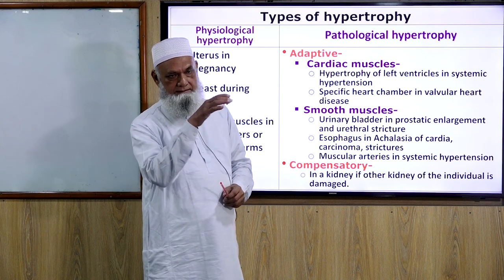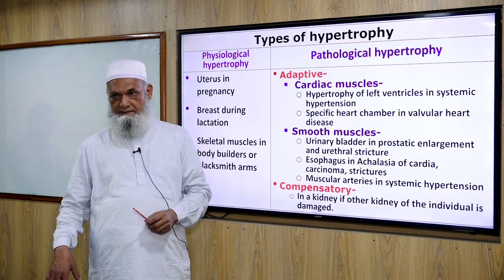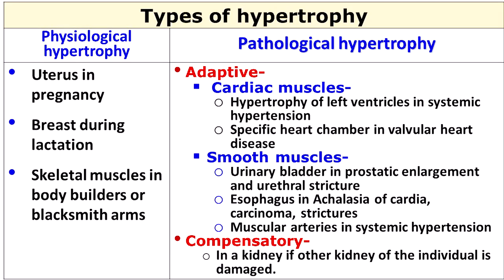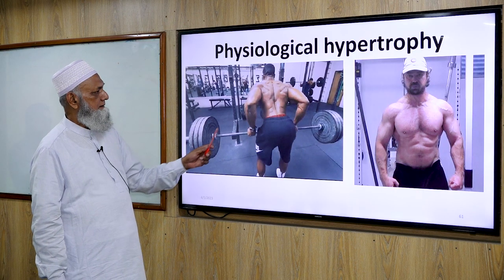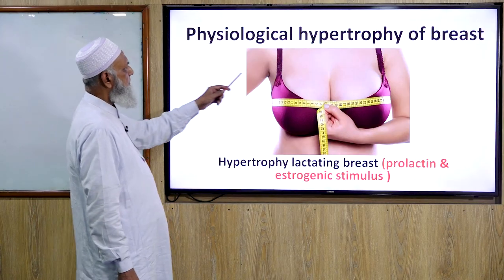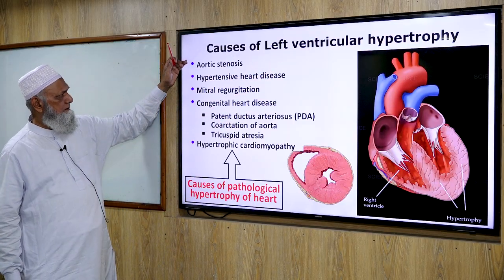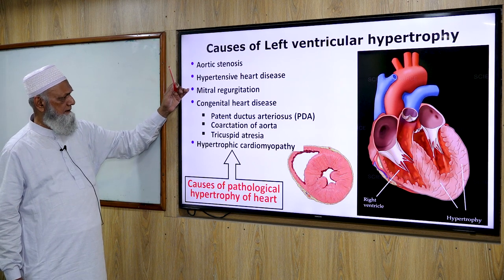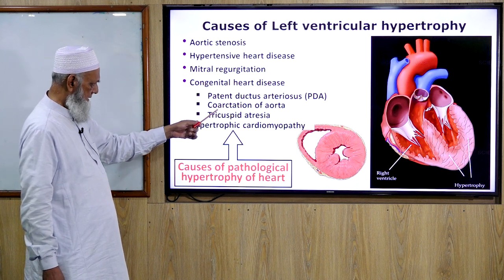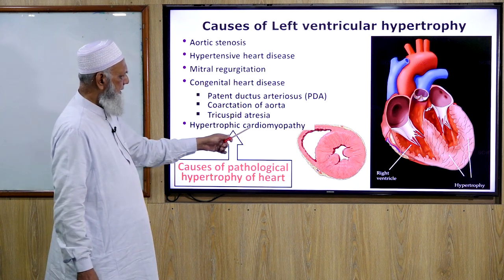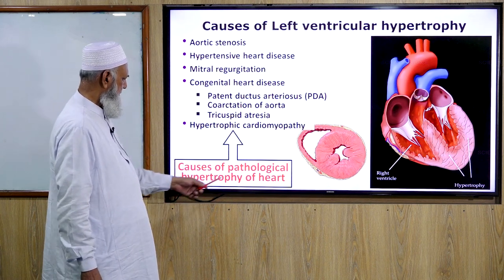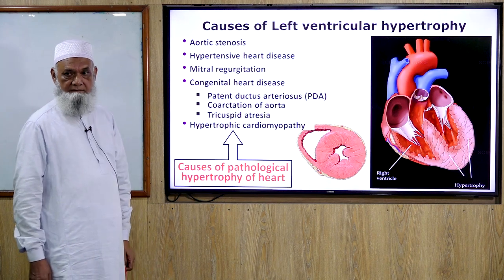Aortic stenosis leads to right ventricular hypertrophy. Physiological hypertrophy of the breast is stimulated by estrogen and prolactin. Causes of left ventricular hypertrophy include aortic stenosis, hypertensive heart disease, mitral regurgitation, congenital heart disease, patent ductus arteriosus, coarctation of the aorta, tricuspid atresia, and hypertrophic cardiomyopathy — these constitute pathological hypertrophy.